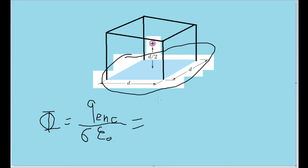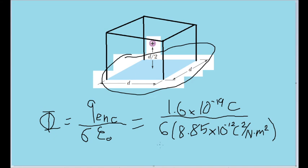We're not given the enclosed charge, but since we only have one proton within the Gaussian surface, that'll just be equal to the charge of one proton, which is 1.6 times 10 to the negative 19 coulombs, divided by 6 times the electric constant, or 8.85 times 10 to the negative 12 coulombs squared per newton meter squared.